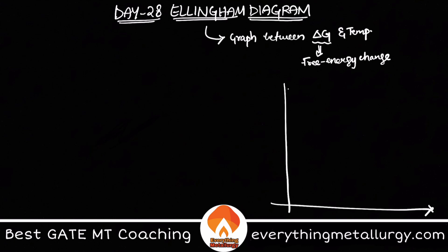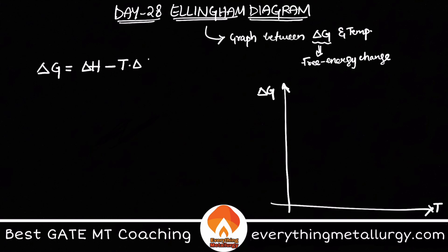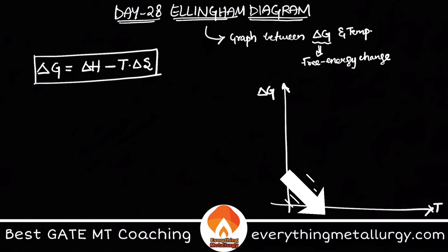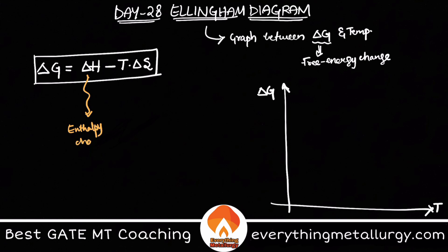The y-axis will be ΔG and the x-axis will be temperature. Now one should immediately think of how this Ellingham diagram will look like. If you remember the equation for ΔG: ΔG = ΔH − T·ΔS. This equation relates the Gibbs free energy change of any reaction to the enthalpy, the temperature, and the entropy change.